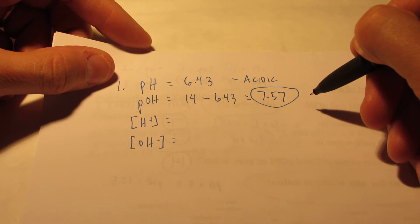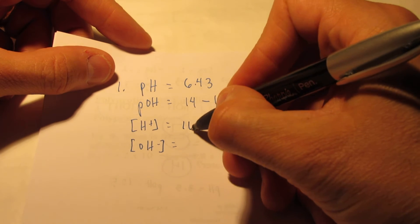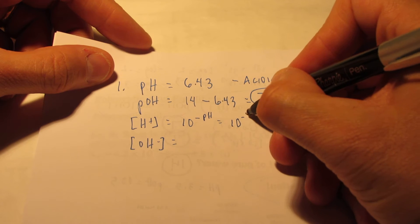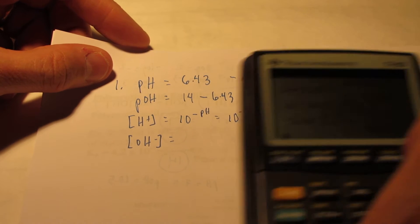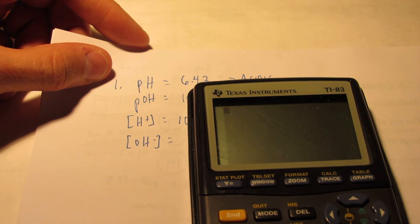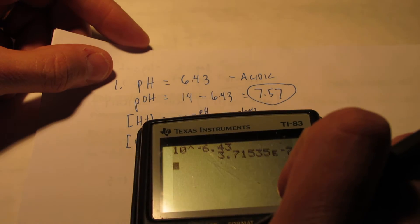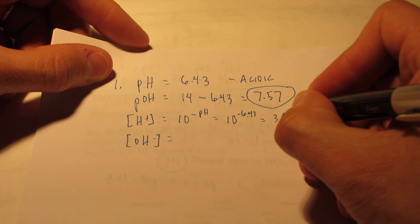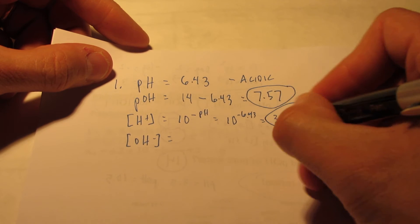Okay, how do we find the hydronium ion concentration? Well, that's 10 to the negative pH. So in this case, it's 10 to the negative 6.43. So let's see what that turns out to be. 10 caret key negative 6.43. We end up with 3.72 times 10 to the negative 7. 3.72 times 10 to the negative 7 moles per liter. Not very concentrated.